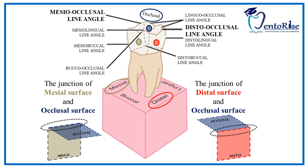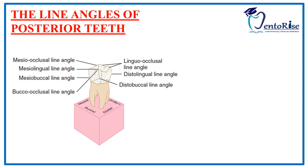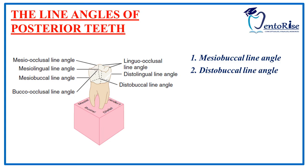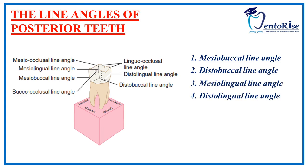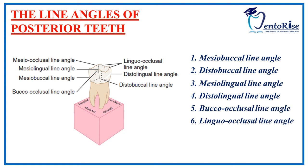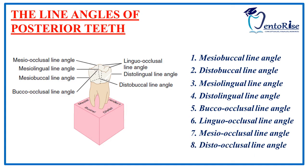Observe the labeling in the figure to understand it better. Therefore, the eight line angles of posterior teeth are: the mesiobuccal line angle, distobuccal line angle, mesiolingual line angle, distolingual line angle, bucco-occlusal line angle, linguo-occlusal line angle, mesio-occlusal line angle and disto-occlusal line angle.